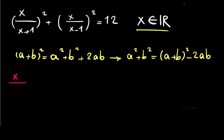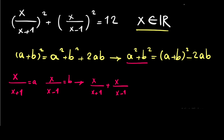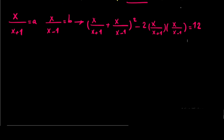I'll call x over (x+1) as a, and x over (x-1) as b. So here we have a squared plus b squared, which equals x over (x+1) plus x over (x-1), all squared, minus 2 times a times b — that's 2 times x over (x+1) times x over (x-1).